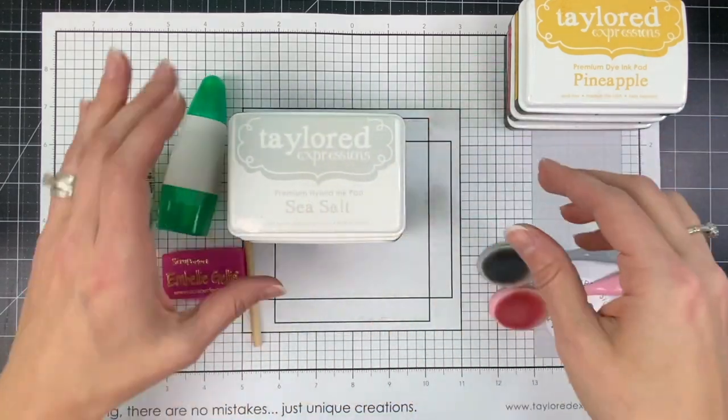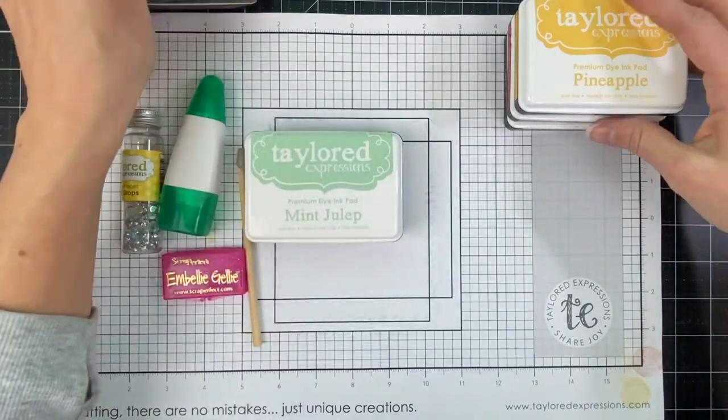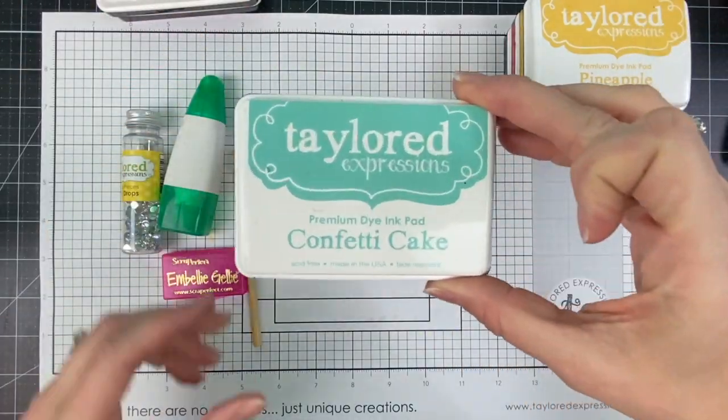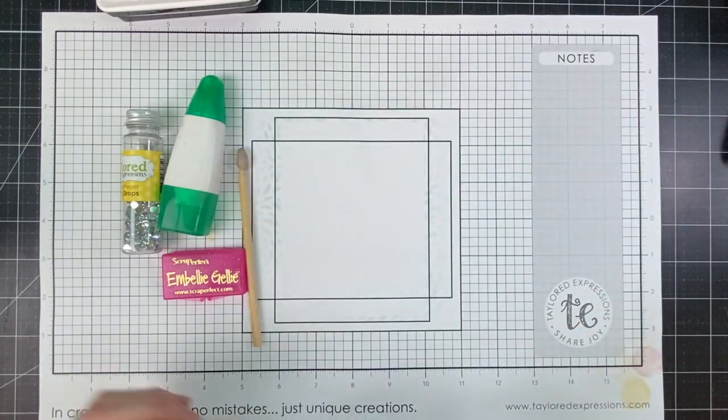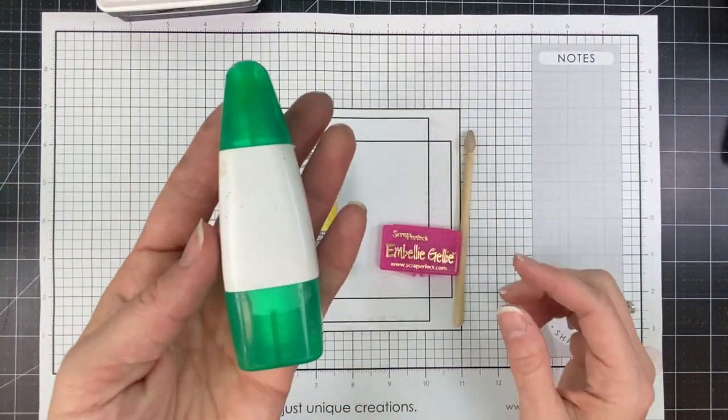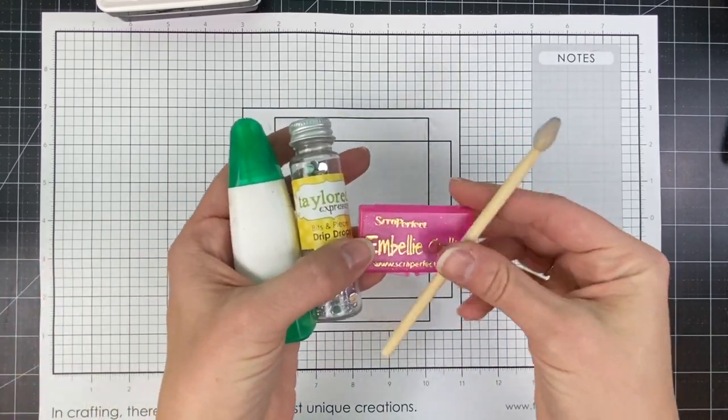I'll be doing some blending with Sea Salt ink and Pink Champagne ink, along with my blender brushes, and then stamping with Mint Julep, Confetti Cake, Pineapple, Fruit Punch, and Oreo. I'll be applying my drip drops embellishments with my Mono Multi adhesive and Embelli Jelly pick and place tool.